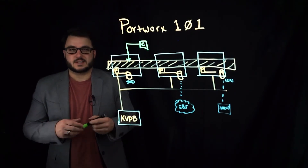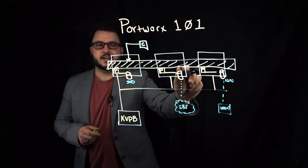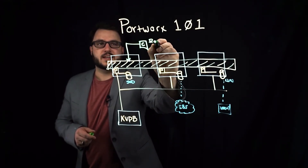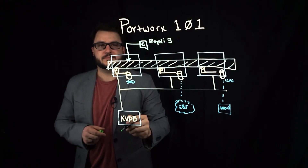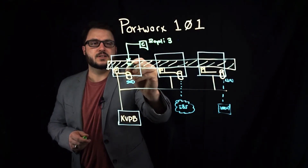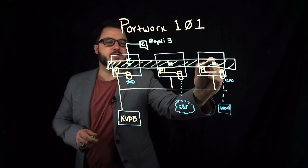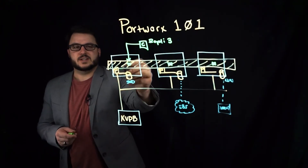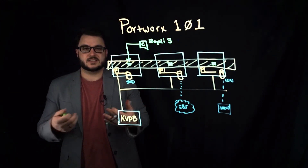The great part about this is that this Portworx storage pool provides container-granular features. For example, a container can specify a replication factor of three, which tells Portworx to make that data available on three of its hosts — meaning there are three copies of the data so that if a node goes down you still have an available copy. This is a container-granular feature.